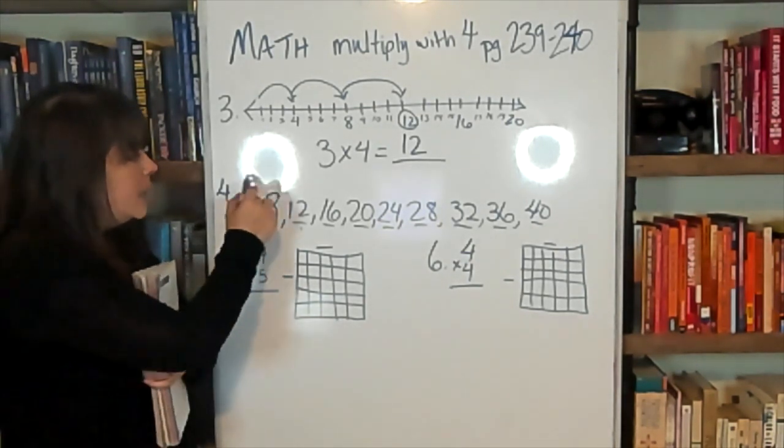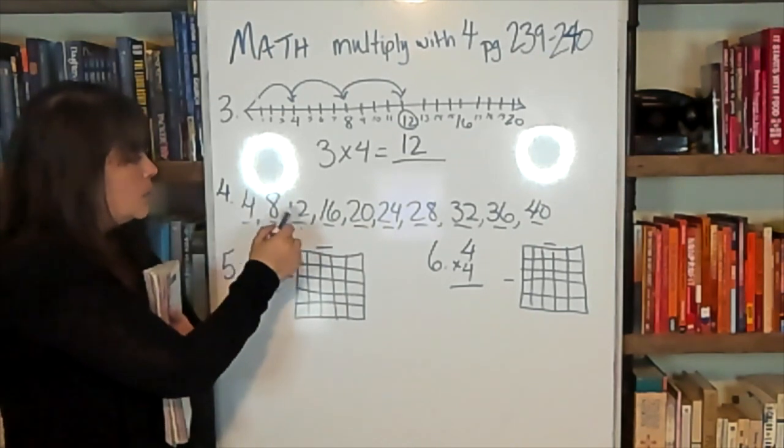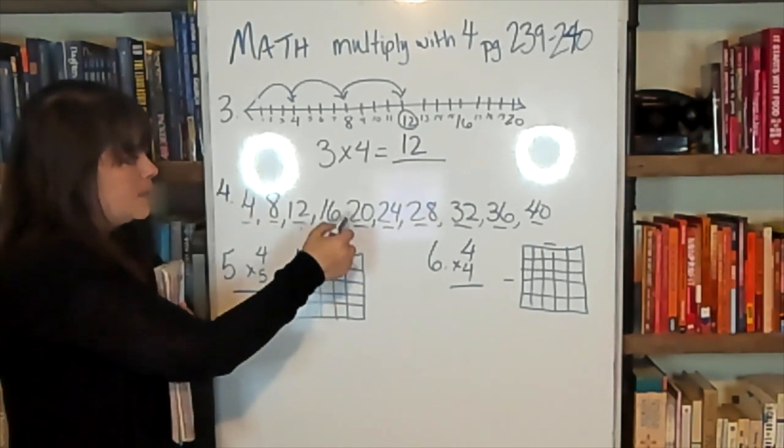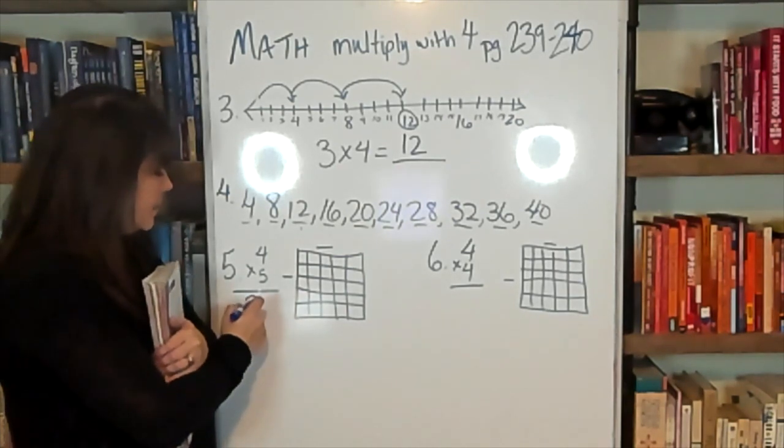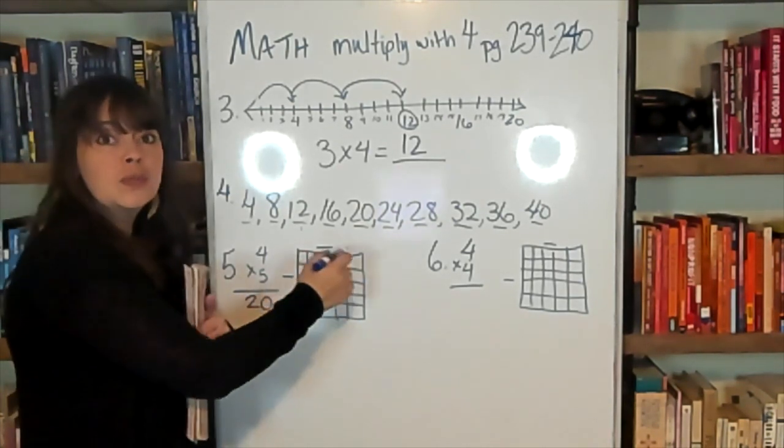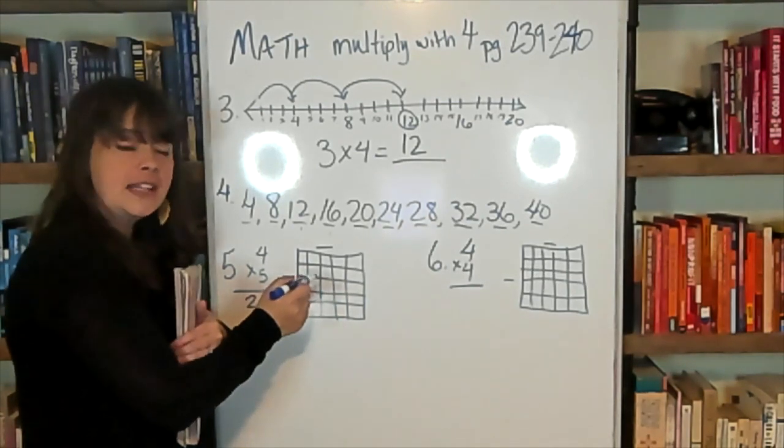So we can keep that in mind. 4 times 5. We can check up here. 1, 2, 3, 4, 5. 4 times 5. We can find the answer right there. Can't we? 4 times 5 is 20. We can also use this array box to find our answer.